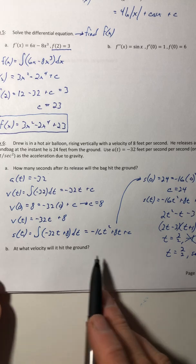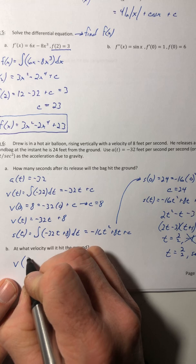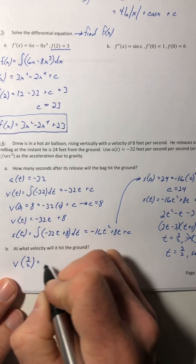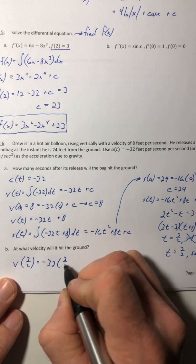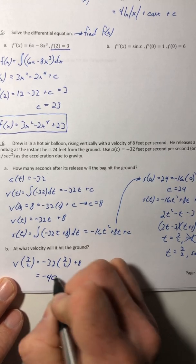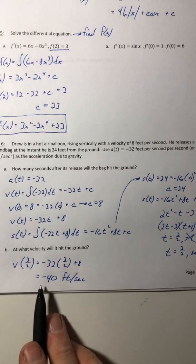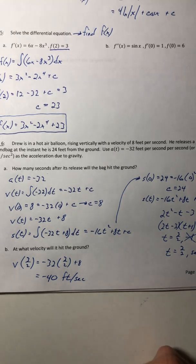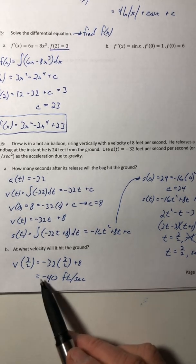And then for b, at what velocity will it hit the ground? Well, you know the time that it hits. So stick that into velocity. So negative 40 feet per second. And that's negative because what direction is the bag headed? It's going down. So when you're going down towards the earth, your velocity is going to be negative.